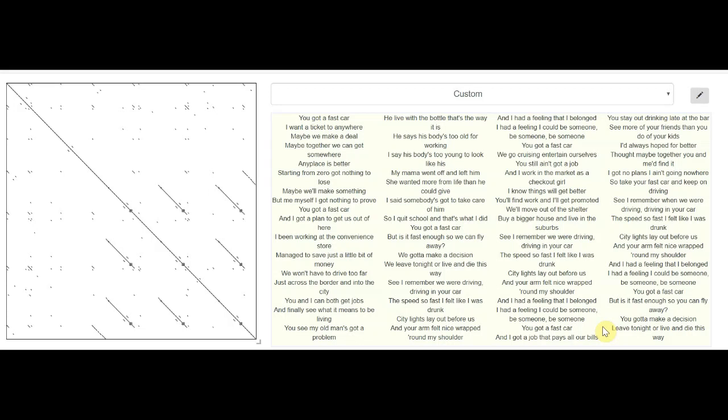On the screen now is a visual representation of my favorite song, Fast Car by Tracy Chapman. The image is a type of matrix called a self-similarity matrix, which is a graphical representation of similar sequences in a data series.